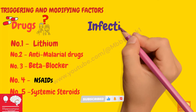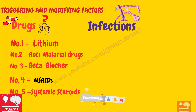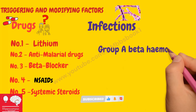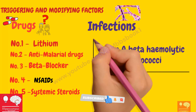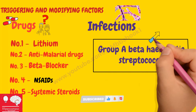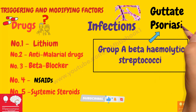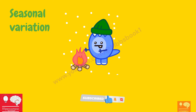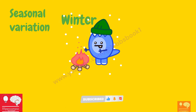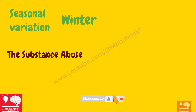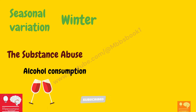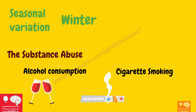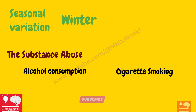Let's talk about infection. What we need to remember here is Group A beta-hemolytic streptococci. Group A beta-hemolytic streptococci can trigger one kind of psoriasis known as guttate psoriasis. Another infection which can worsen psoriasis is HIV. Regarding seasonal variation, just like most skin diseases, psoriasis also worsens in the winter season. The last component is substance abuse — both alcohol consumption as well as cigarette smoking are habits which can be triggering factors for psoriasis.